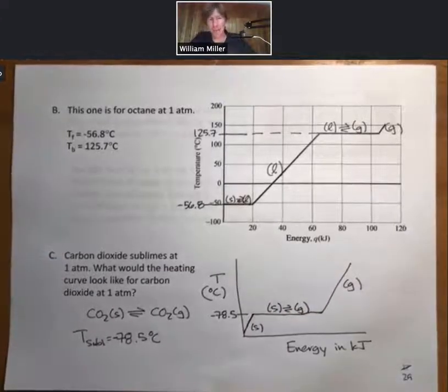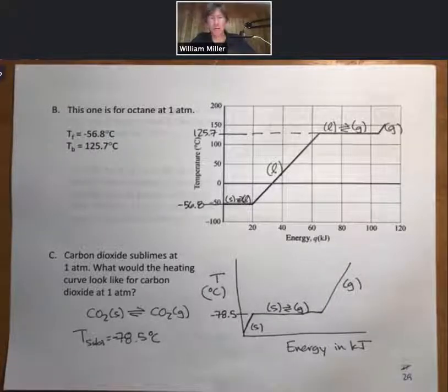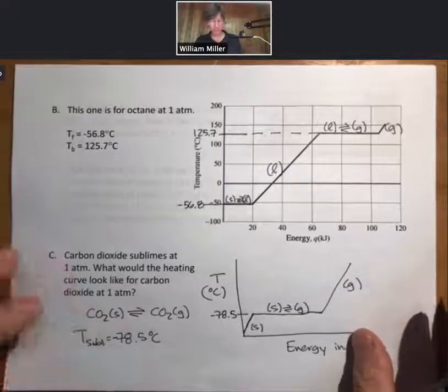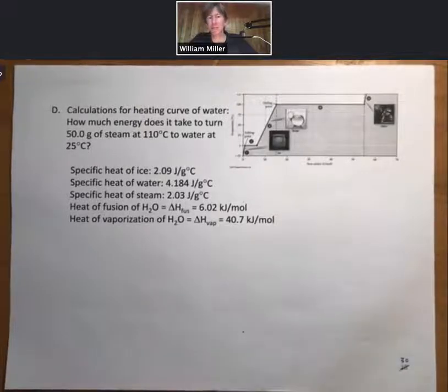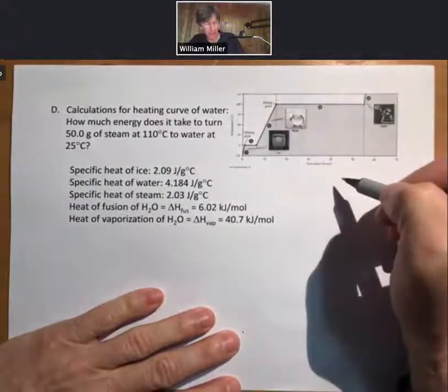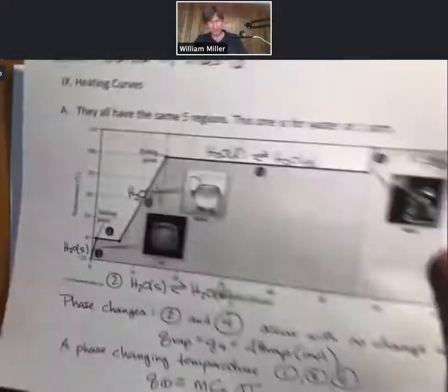With a solid to gas transition, totally possible, there are many variations on this one, but by far the most common one is going to be the one for water. Now let's do some calculations involving the heating curve for water. Question: how much energy does it take to turn 50 grams of steam at 110 degrees Celsius to water at 25 degrees Celsius?